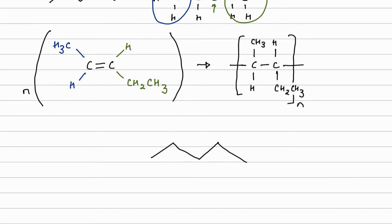First carbon, I have got a CH3 group. And the second carbon, I have got CH2, CH3. So it's going to look something like that. I would put in my brackets and an N.